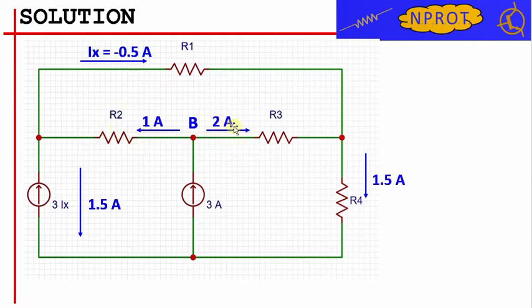The current circulating in R3 has an intensity equal to 2 amperes and finally by algebraically adding the current circulating in R1 and R3, we obtain the current flowing through R4 which is equal to minus 0.5 amperes plus 2 amperes, and therefore equal to 1.5 amperes.